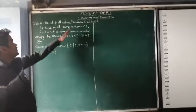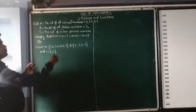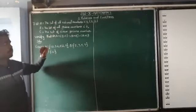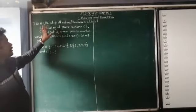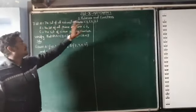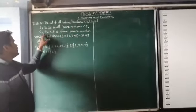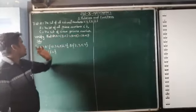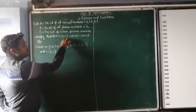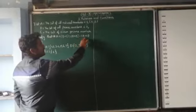In the previous video, Chapter 1.1, 7th subdivision was completed. Now, in the 7th subdivision, we solve the 2nd subdivision. Once again, I have to read the question. Let A equal the set of all natural numbers less than 8. B equal the set of all prime numbers less than 8. C equal the set of even prime numbers. Verify that A×(B−C) = A×B − A×C.